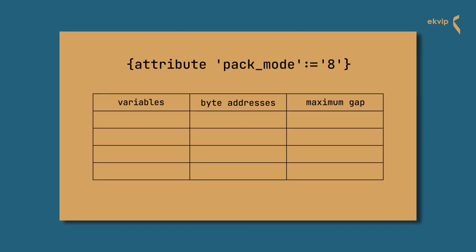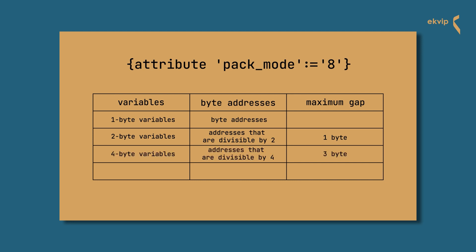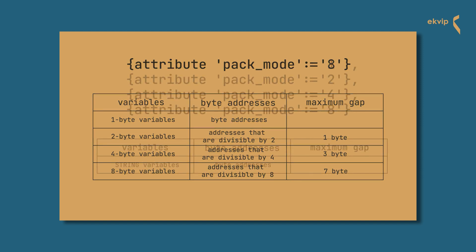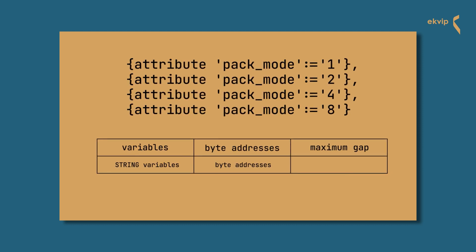If your pack type is 8-byte aligned, 1-byte variables are assigned to byte addresses, and 2-byte variables are assigned to addresses divisible by 2 with a maximum gap of 1 byte. 4-byte variables are assigned to addresses divisible by 4 with a maximum gap of 3 bytes. And 8-byte variables are assigned to addresses divisible by 8 with a maximum gap of 7 bytes. For all pack types, strings are always at byte addresses and no gap is created.